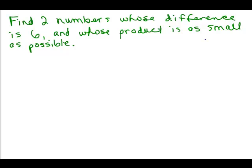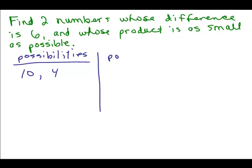So let's just look at some possibilities of numbers that subtract out to be 6. Here's some possibilities: 10 and 4. When you subtract you get 6, right? And what would their product be? Well, 10 times 4 is 40.